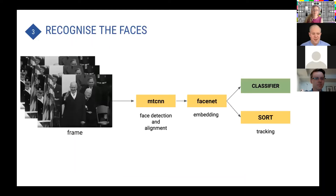Once we have the trained model, we apply it to the videos in our collection. Frame by frame, we use MTCNN to detect faces in each video frame, use FaceNet to extract embedding features from these detected faces, and then these feature vectors are passed through the classifier to extract the right prediction for each face.